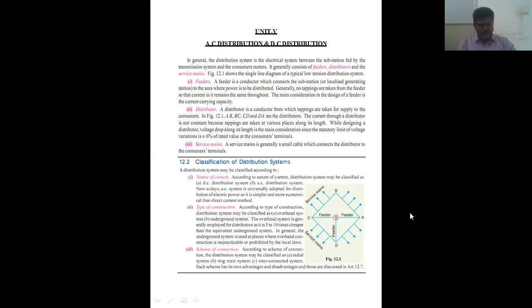According to type of construction, distribution systems may be classified as overhead systems or underground systems. The overhead system is generally employed for distribution as it is cheaper. The underground system is used at places where overhead construction is prohibited by local law.